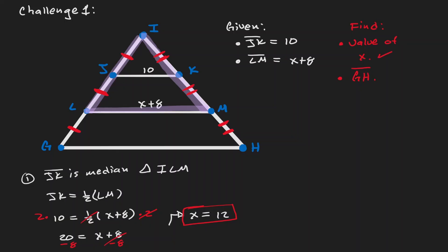Now let's think about the second objective, to find the length of GH. Now where is GH on the figure? Well GH we consider here as the base of this triangle. But also notice that GH is also the base of this big trapezoid that we have here. And if that is the case, then notice that LM is the median of that trapezoid.